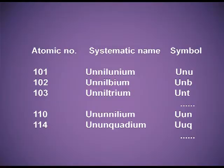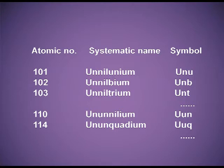For example, the element with atomic number 101: its systematic name will be Unnilunium. For 1 it is 'un', for 0 it is 'nil', and again for 1 it is 'un', and then the name ending is 'ium'. So for atomic number 101, the systematic IUPAC name is Unnilunium, and the symbol is Unu — the first U is capital and the other letters are in small.